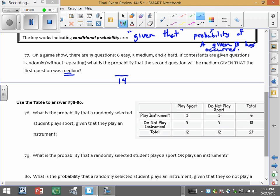We know that the first one was medium. So we started with 5, which means we're down to 4. So 4 out of 14 would simplify to 2 sevenths. And for those of you who like to do things as decimals, it's about 0.286. So either one of those would work.